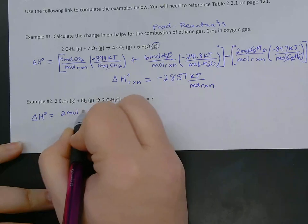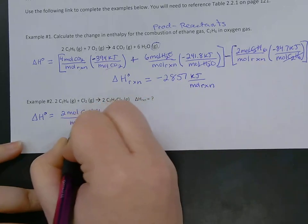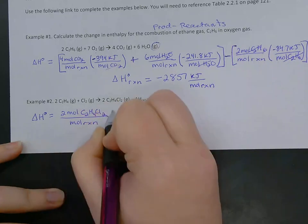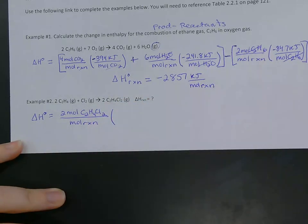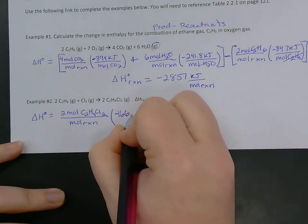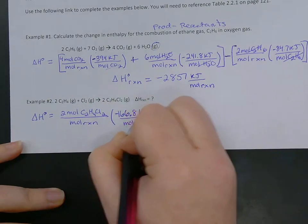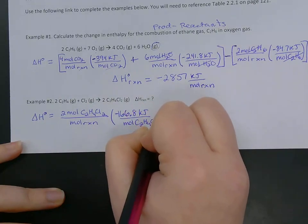We've got two moles C2H4Cl2 per mole reaction times its value from our table. So it is negative 166.8 kilojoules per mole C2H4Cl2.